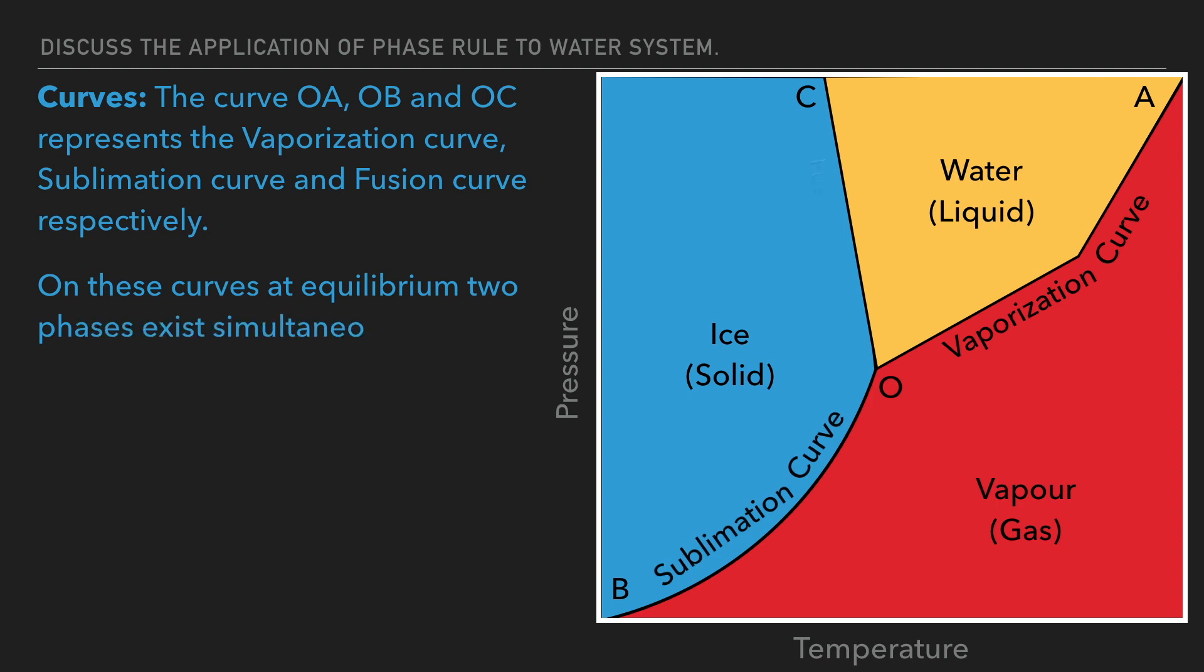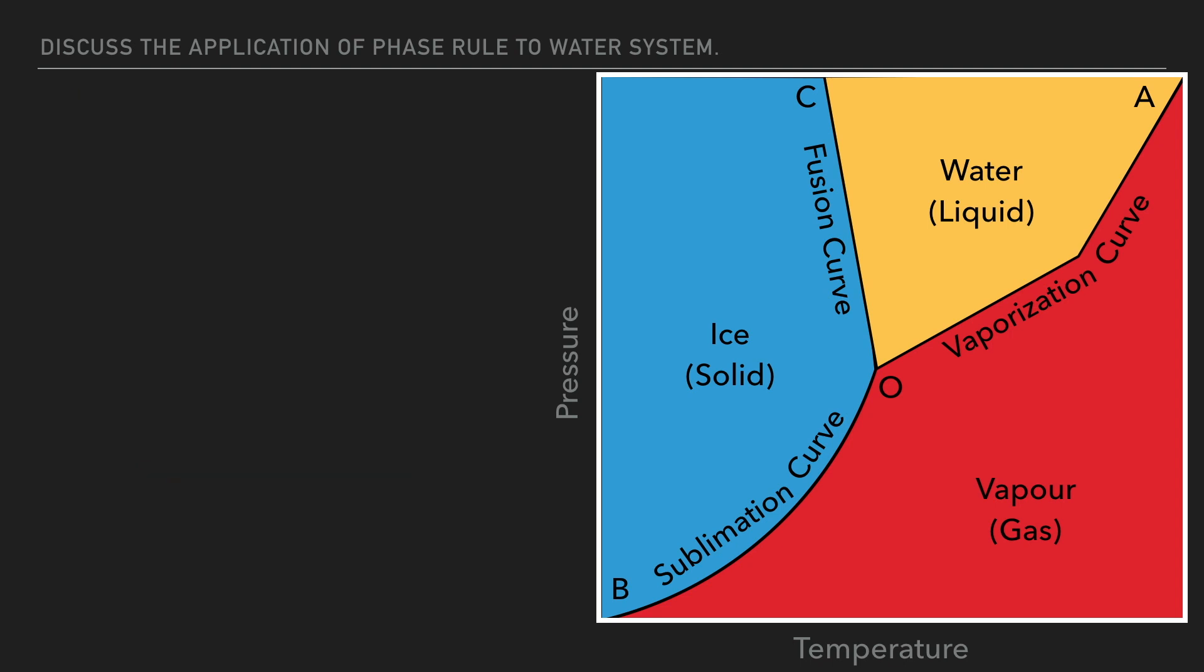Thus according to phase rule, on any curve number of phases P equals 2 and number of constituent C equals 1. Therefore the phase rule becomes F equals C minus P plus 2, which equals 1 minus 2 plus 2, which is 1. So the system is univariant or monovariant at curves.